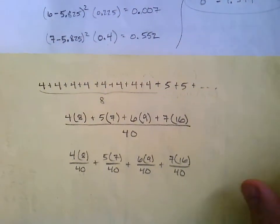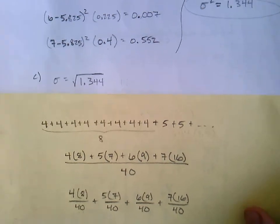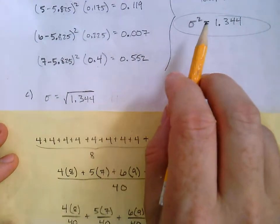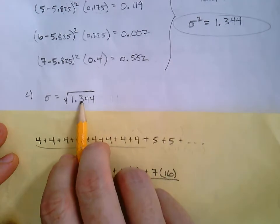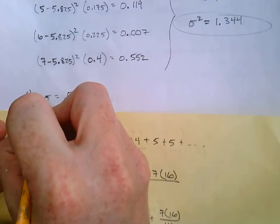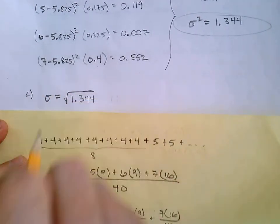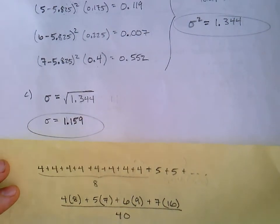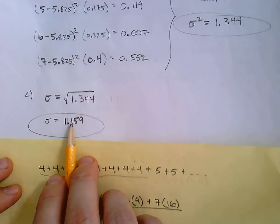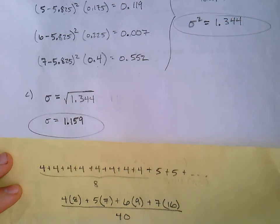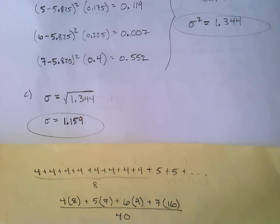Finally, part C for this example. The standard deviation. We just take our answer, 1.344. Take the square root. And that's going to be just little sigma. I got 1.159 when I rounded to three places. And there you go. Let's stop this video right here.